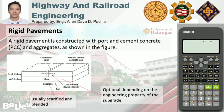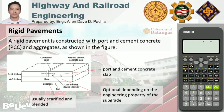The topmost layer is the Portland cement concrete slab. Notably, there is a load transfer device called the dowel. Dowel bars are short steel bars that provide a mechanical connection between slabs without restricting horizontal joint movement. They increase load transfer efficiency by allowing the adjacent slab to assume some of the load before the load is actually over it. There is also a joint here called the contraction joint.